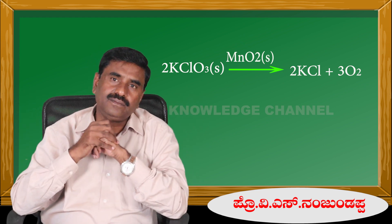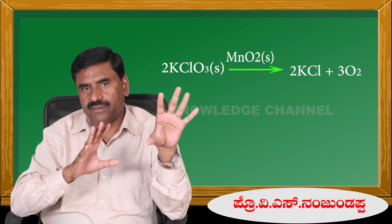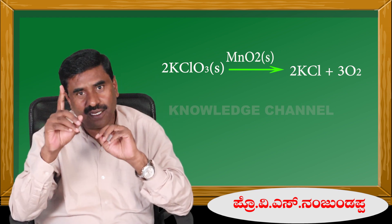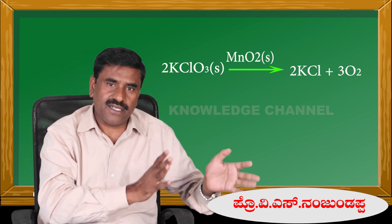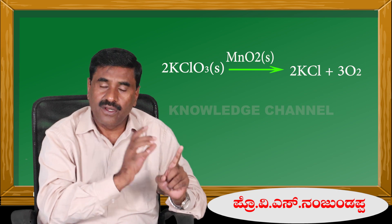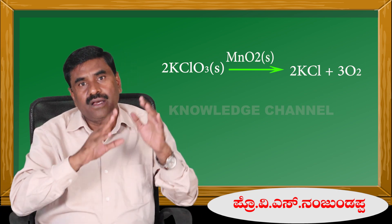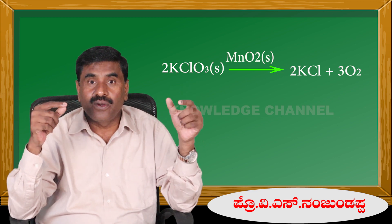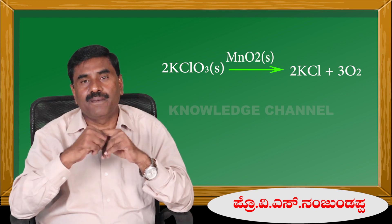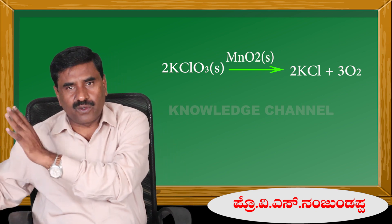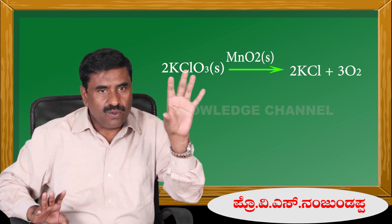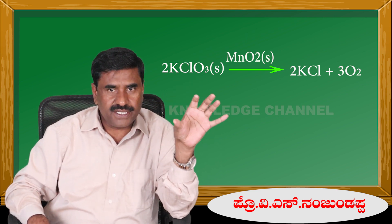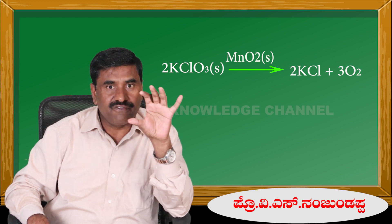For example, consider the decomposition of potassium chlorate. The potassium chlorate is in the solid state, and manganese dioxide is also in the solid state. The reactants and catalyst are both in solid state. This is an example of a homogeneous catalytic reaction. Homogeneous catalysis is a catalytic reaction in which the catalyst and the reactants are in the same phase.